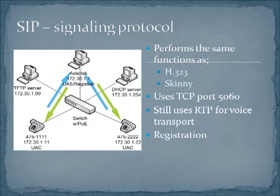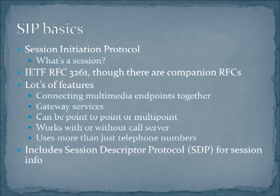RTP is something we have in common across signaling protocols, and we'll talk about RTP in another series of videos. But right now we're talking about the signaling protocol. Unlike H.323 and Skinny, we're going to go to port 5060 for SIP. SIP has all of the familiar functions that we have with H.323 or Skinny — phones that register, a way to contact other stations to let them know that we want to talk to them. These are all things handled by our signaling protocol.